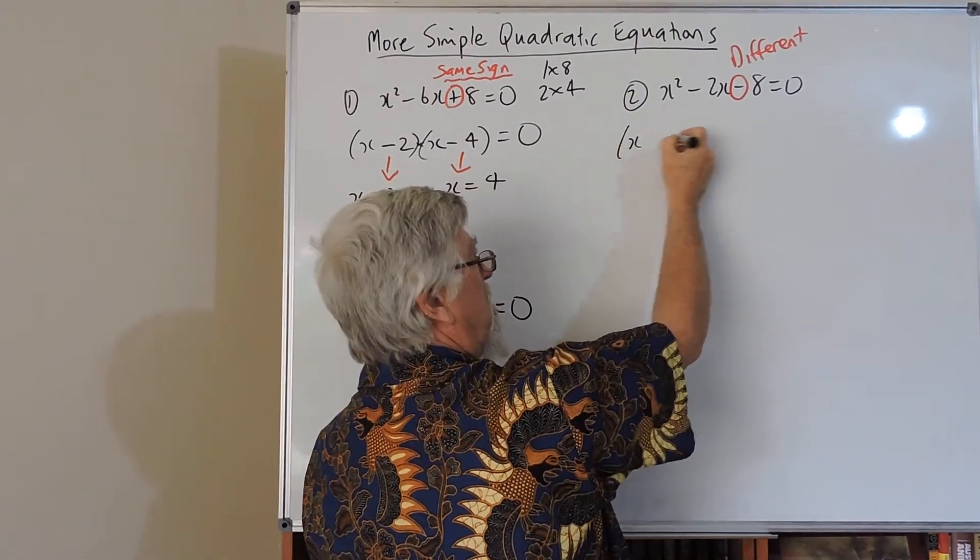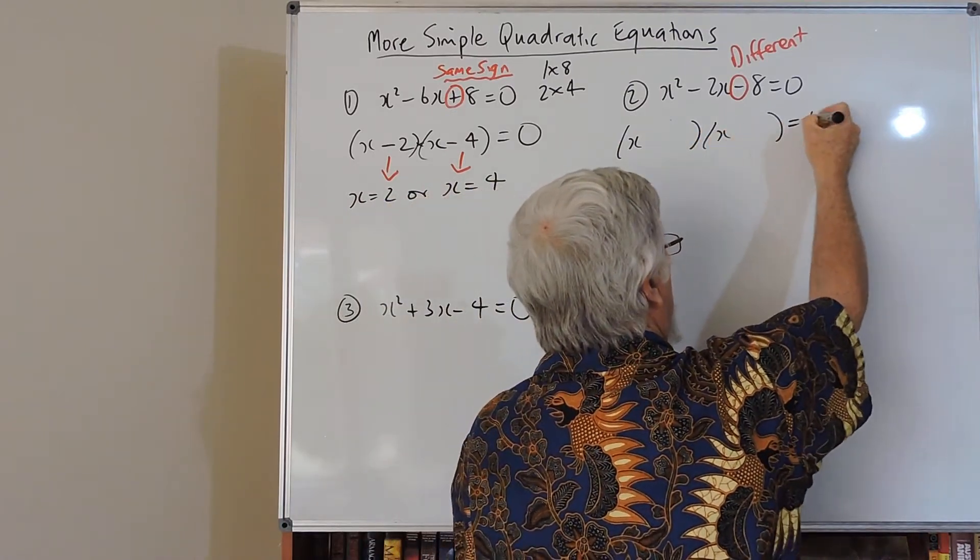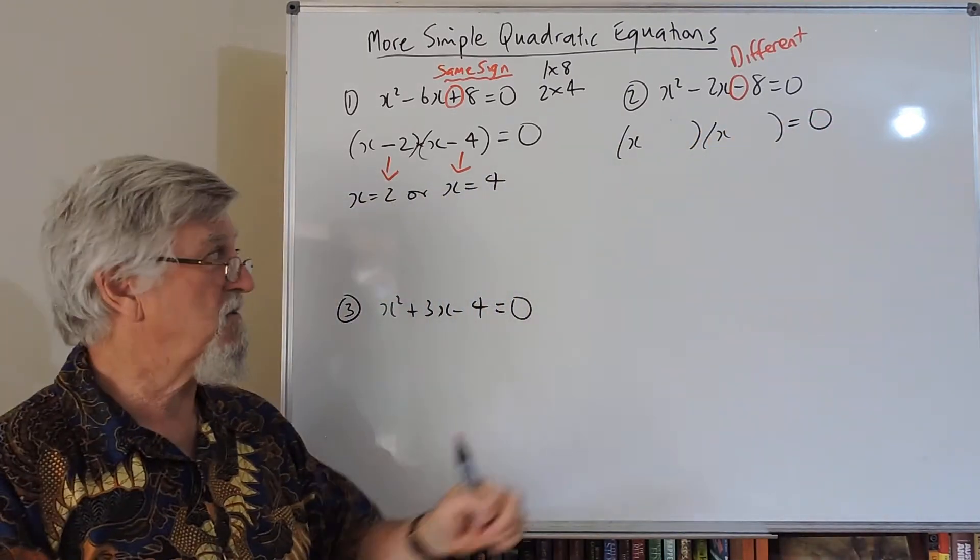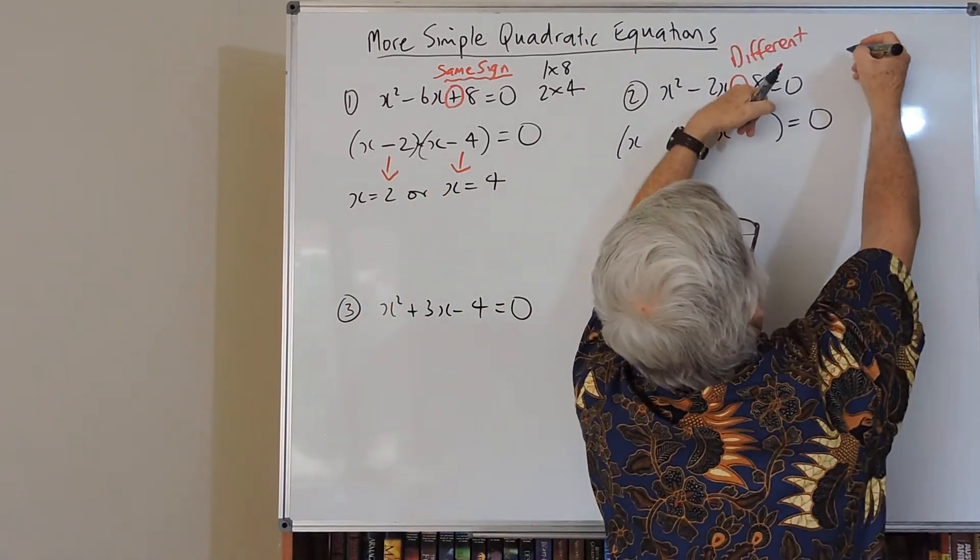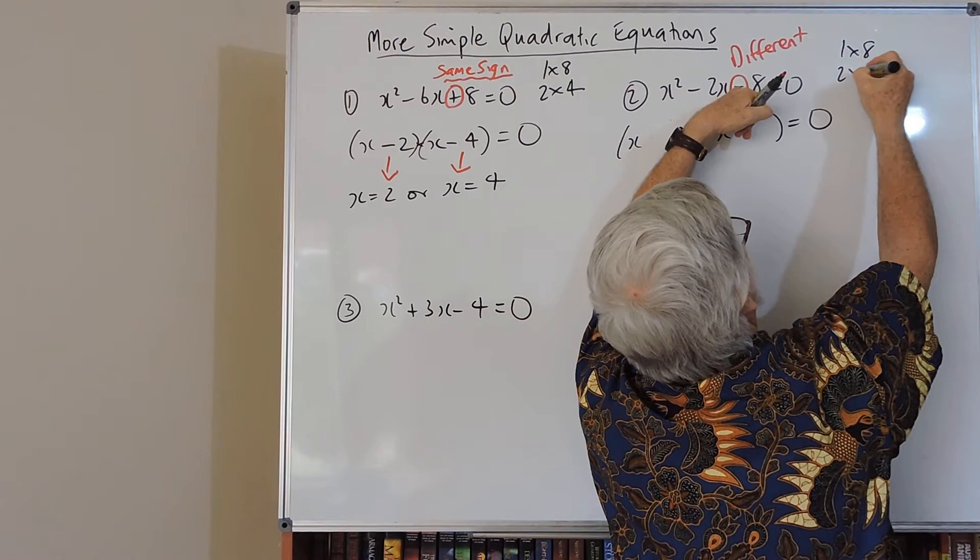Same system. Go back to the two x's here. Because everybody's expanding the brackets there. And x times an x would be x squared. How can I get an 8? The same as before. A 1 and an 8, or a 2 and a 4.